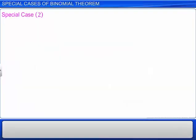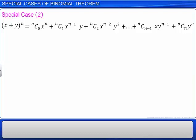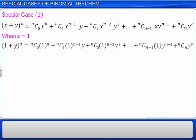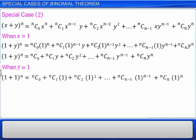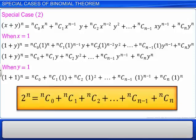Let us consider another case now. Consider the binomial expansion of x plus y whole raised to the power of n. When x is equal to 1, the binomial is 1 plus y whole raised to the power of n. This can be simplified further to get the expression shown here. Further, when y is also equal to 1, the expression is as shown. This is the simplified form, and this is a formula to find the sum of the coefficients of a binomial expansion.